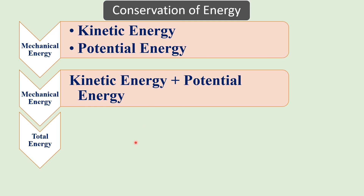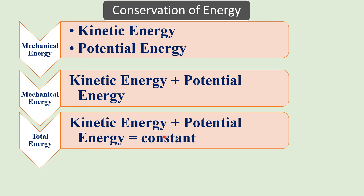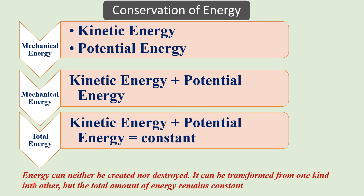As in our previous example of the falling hammer, potential energy is converted into kinetic energy, so the total energy of the system remains constant: kinetic energy + potential energy = constant. Potential energy can be converted into kinetic energy or kinetic energy into potential energy, but the total energy remains constant.